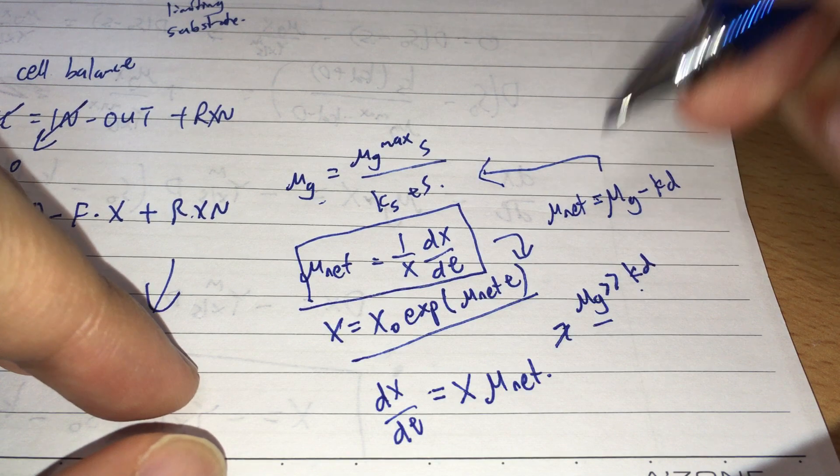For this case, there are two cases. One is where mu G is much greater than KD. What is KD? In a cell population, you expect some cells to grow and some cells to die. Mu G represents the growth coefficient, the growing part, and KD equals the dying part. We have a net growth rate of mu net, or net specific growth rate of mu net. That will be mu G minus KD.